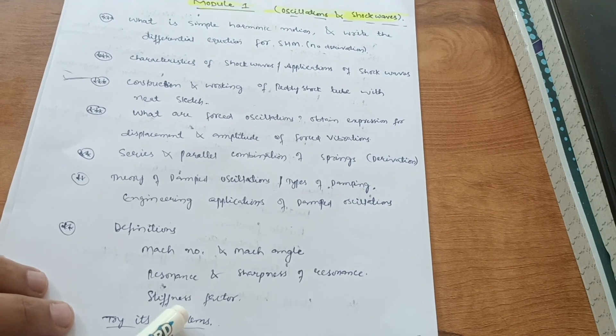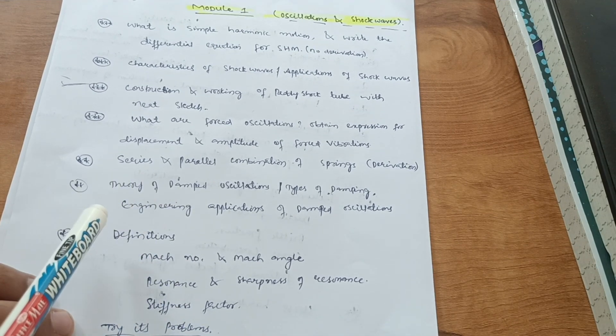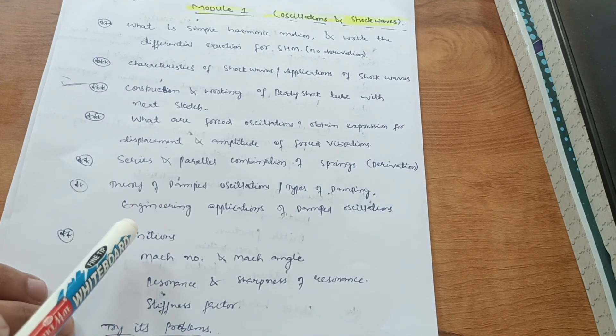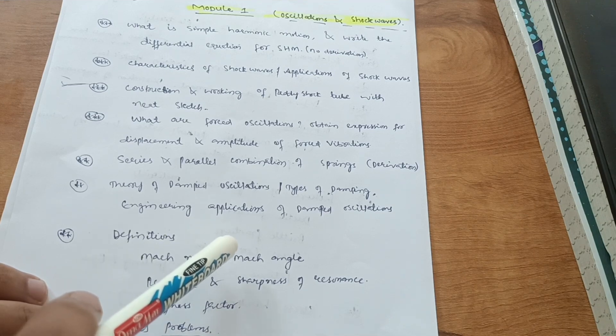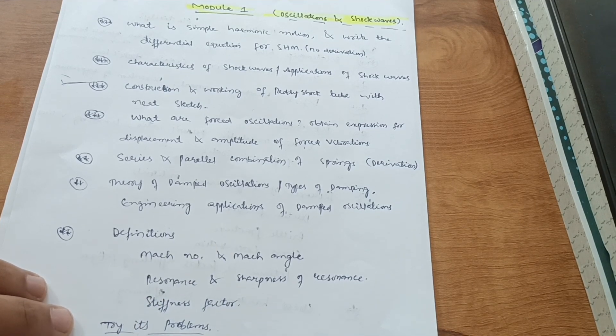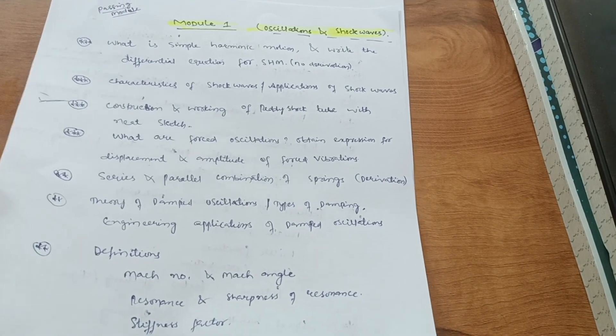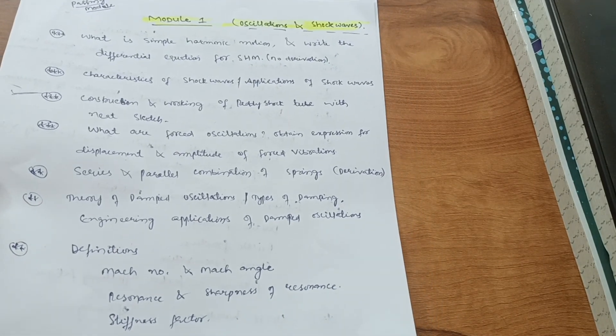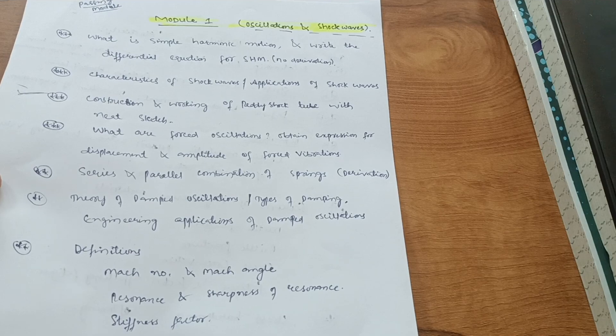Also some definitions like Mach number and Mach angle, resonance and sharpness of resonance, stiffness factor, and tried problems which are simpler ones. These are the three questions which are most important from this particular chapter. Just refer these questions only and you will definitely get 15 to 16 marks if I not consider the numerical part.